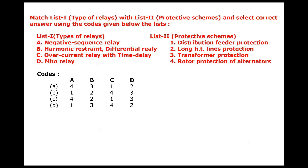Match the following again. Negative sequence relay — where do we use it? For rotor protection of alternators. Harmonic restraint differential relay is used in transformer protection. It is a differential relay with an additional harmonic restraint feature to prevent nuisance tripping or mal-tripping during inrush currents.